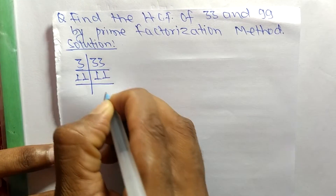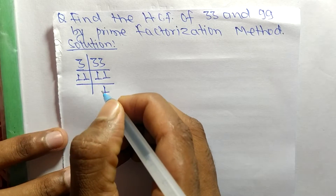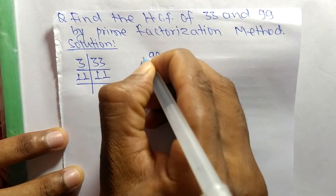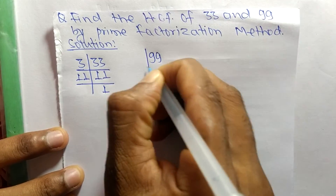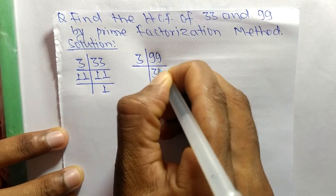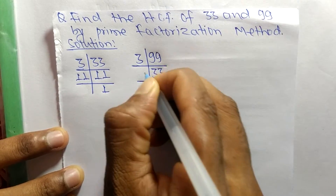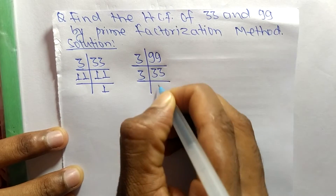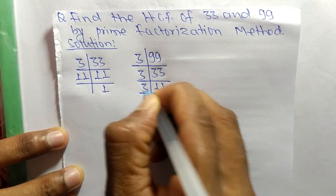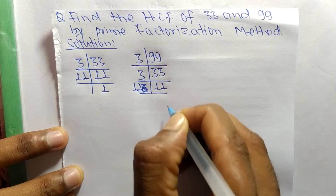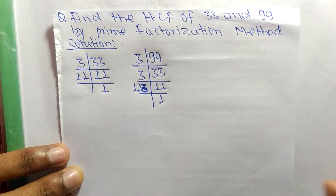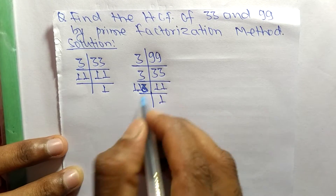The prime factors of 99 are: 3 times 33 equals 99, then 3 times 11 equals 33, and 11 times 1 equals 11.